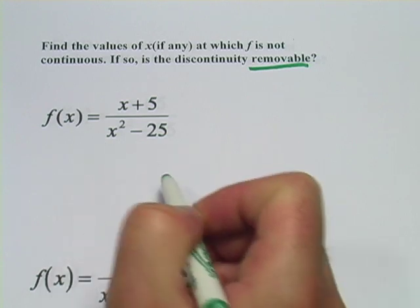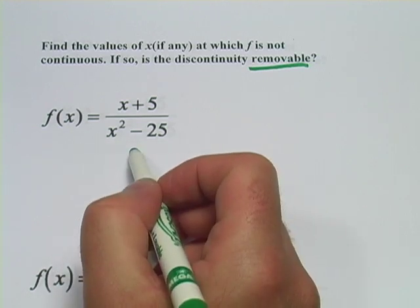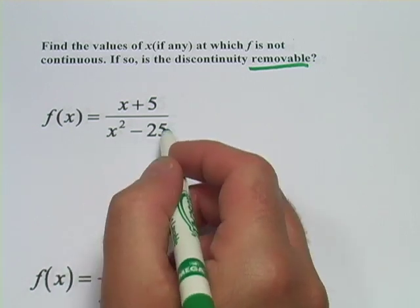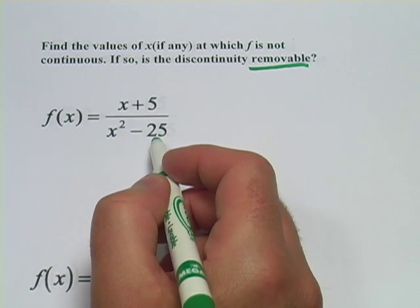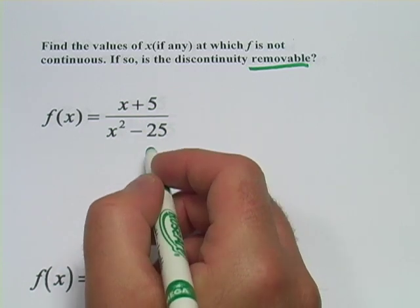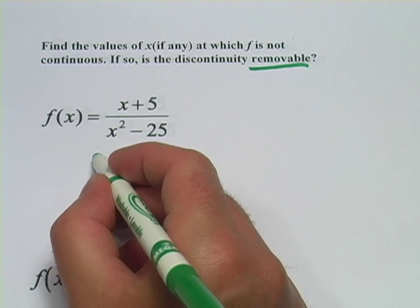The way to do this typically is to factor out our denominator, figure out where it's zero, and then examine those discontinuities. So let's try that.